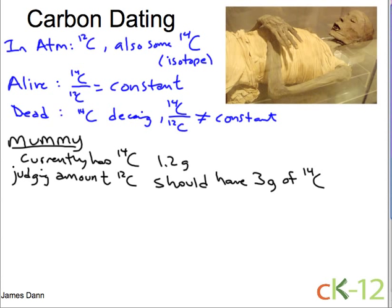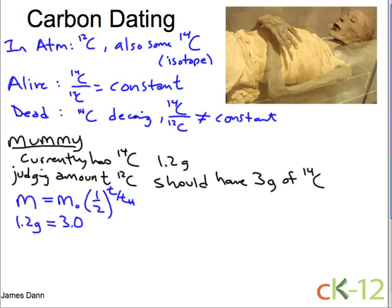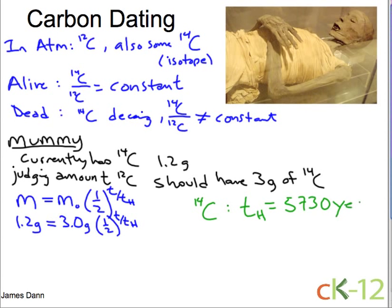We can simply use the half-life function. The half-life function tells us that the current mass equals the starting amount of mass multiplied by one-half to the power of t over the half-life time. You can see that when the time equals the half-life time, you just multiply the initial amount by half. Plugging in our numbers: we currently have 1.2 grams of C14, and we know from the amount of C12 that there originally was 3 grams of C14. We also know that the half-life time for C14 is 5,730 years.